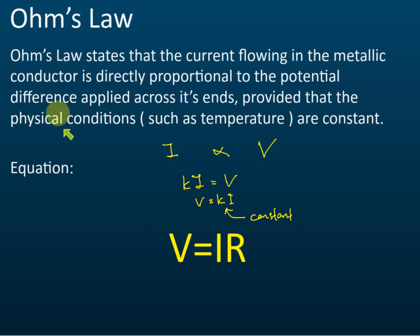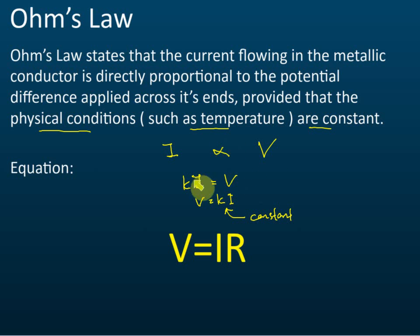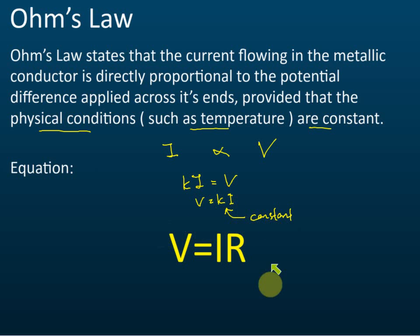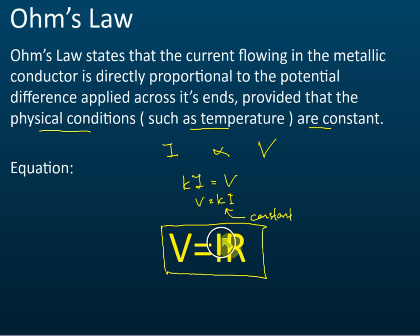Ohm's law has a requirement: the physical conditions must be constant. Mathematically, we write I proportional to V, and changing this to an equation, we write Ki equals V — because changing from proportional to equation, we must multiply by a constant. V equals Ki. We then define K as resistance, so the formula becomes V equals IR. V equals IR is the equation derived from Ohm's law.